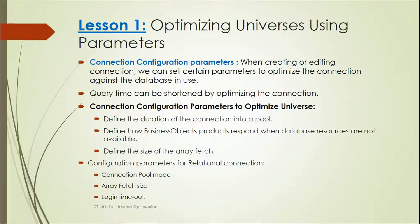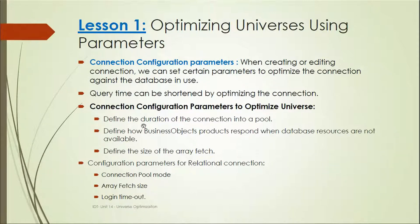Connection configuration parameters is one area where, when creating or editing a connection, we can set up certain parameters that will optimize the connection against the database in use. We can shorten query time by optimizing these connection configuration parameters, and we can define the duration of the connection to the pool.